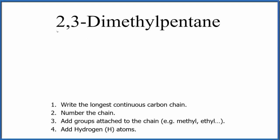In this video, we'll write the structure for 2,3-dimethylpentane. First off, we need to recognize that this is an alkane. It ends in A-N-E. That means it's going to be carbons and hydrogens and only single bonds.